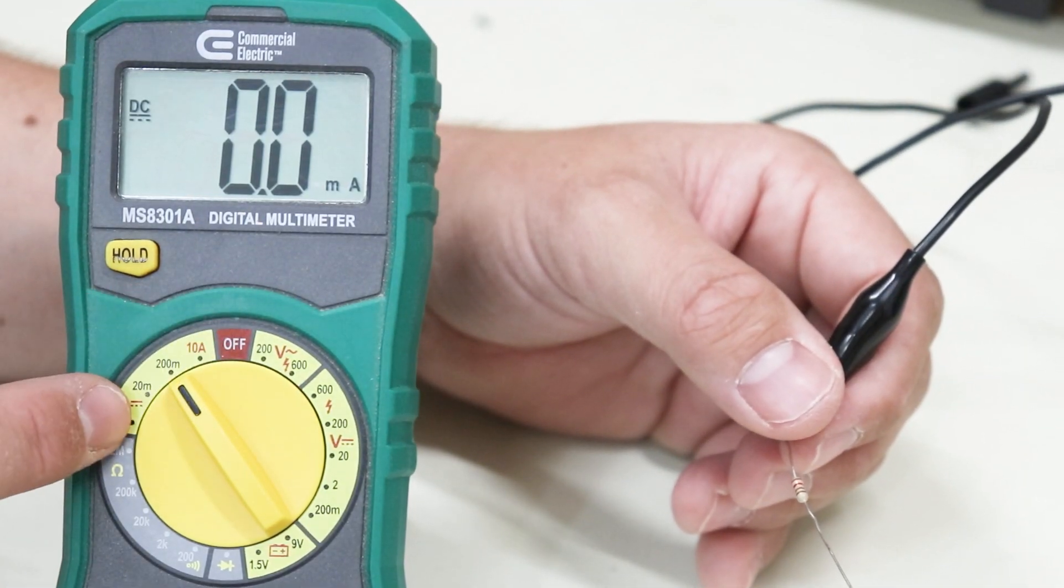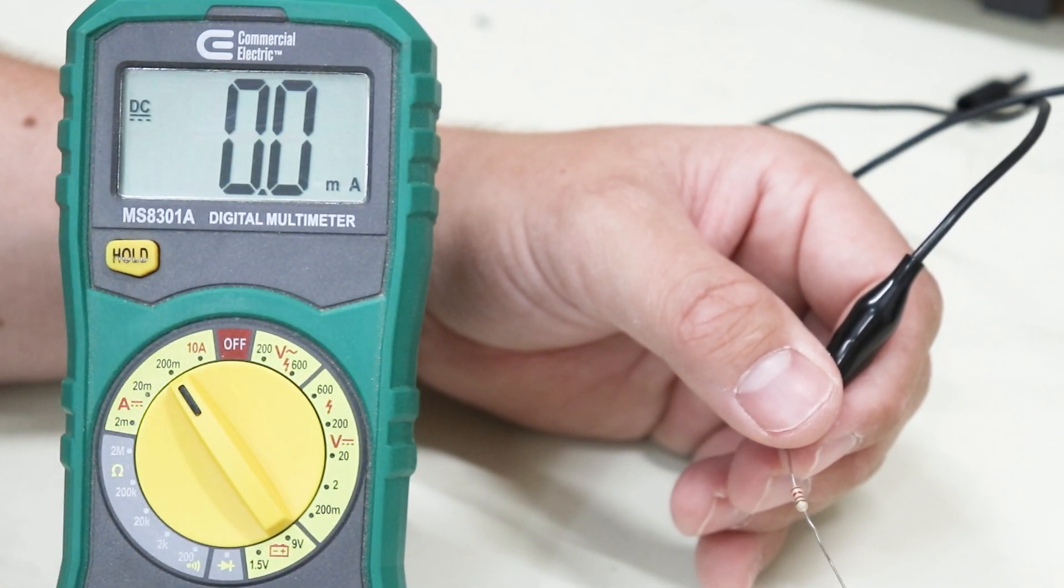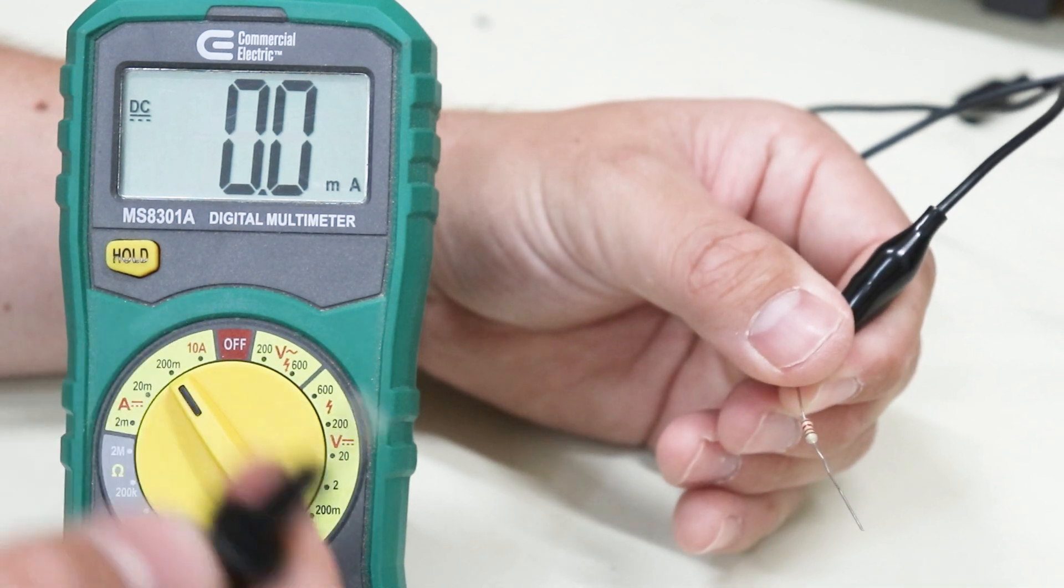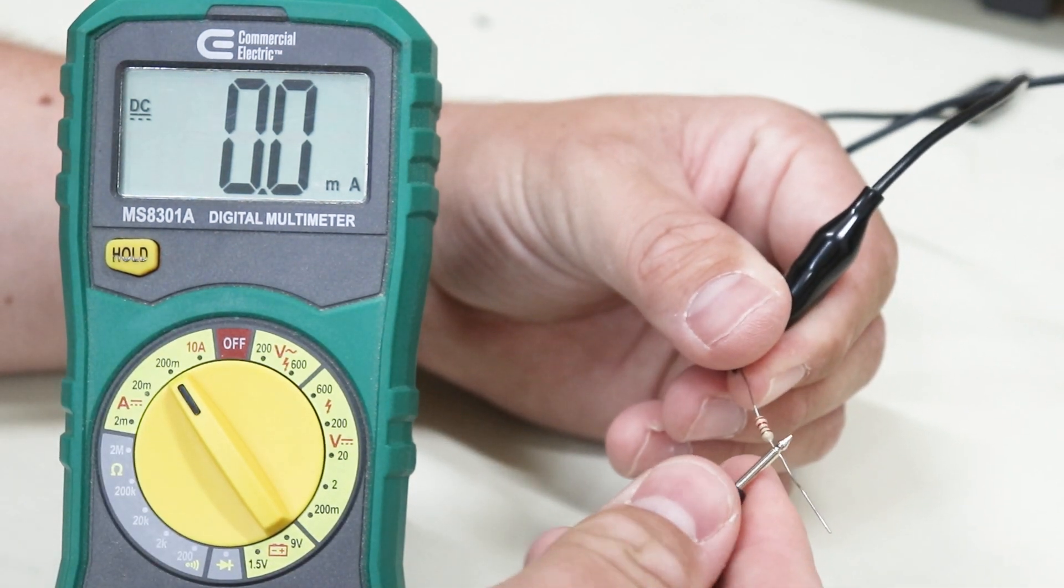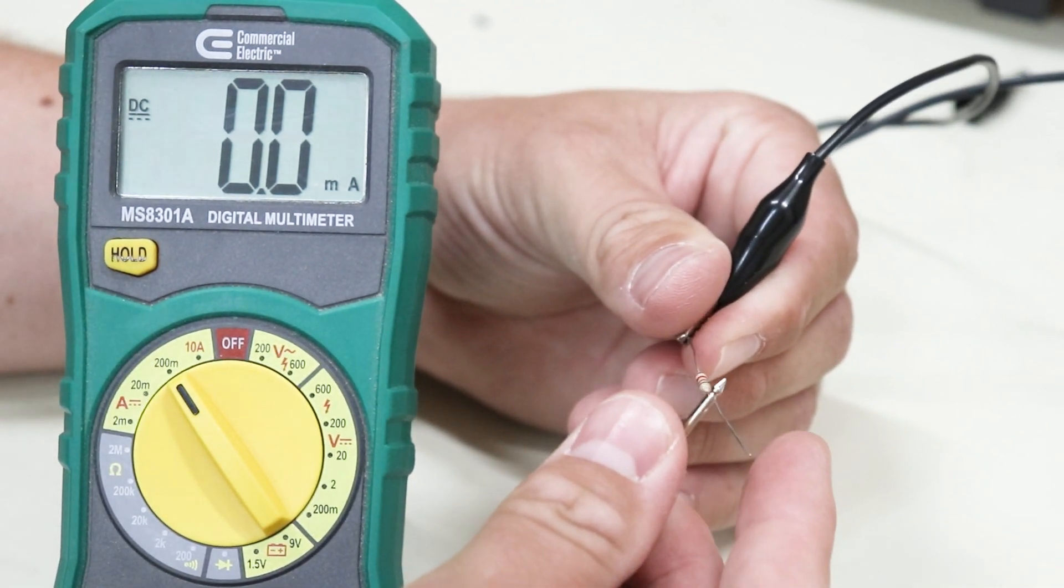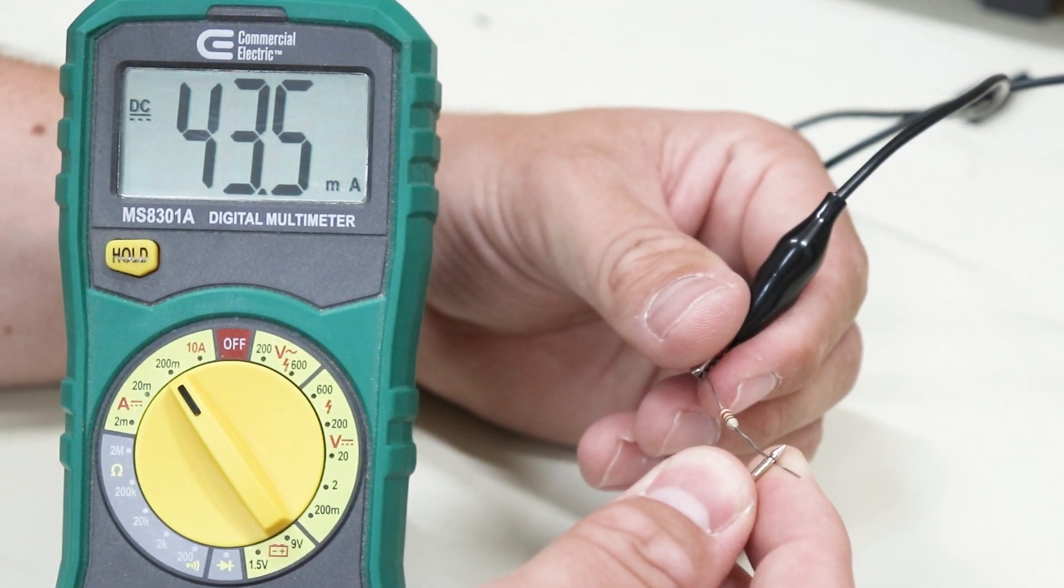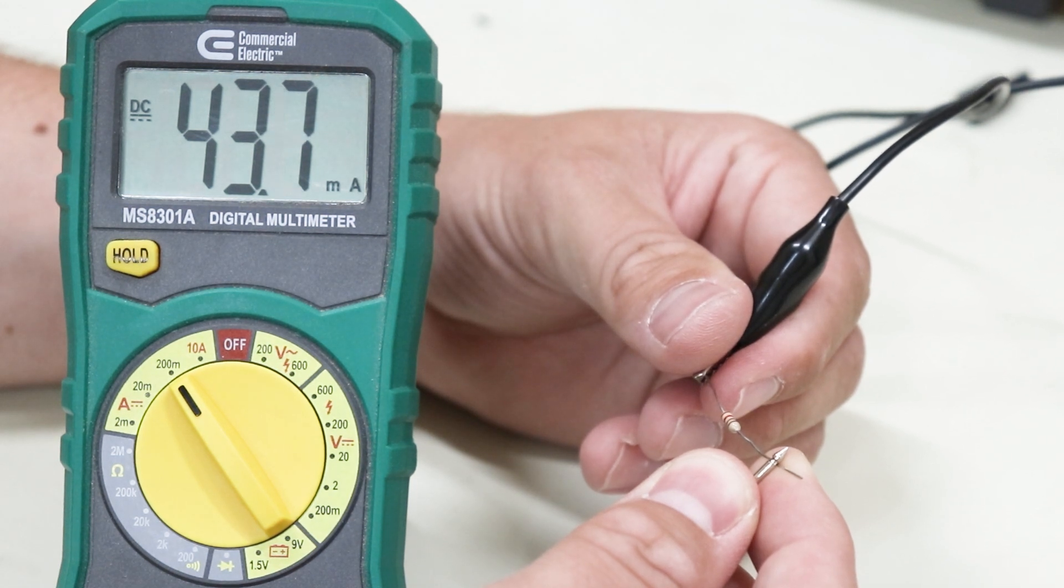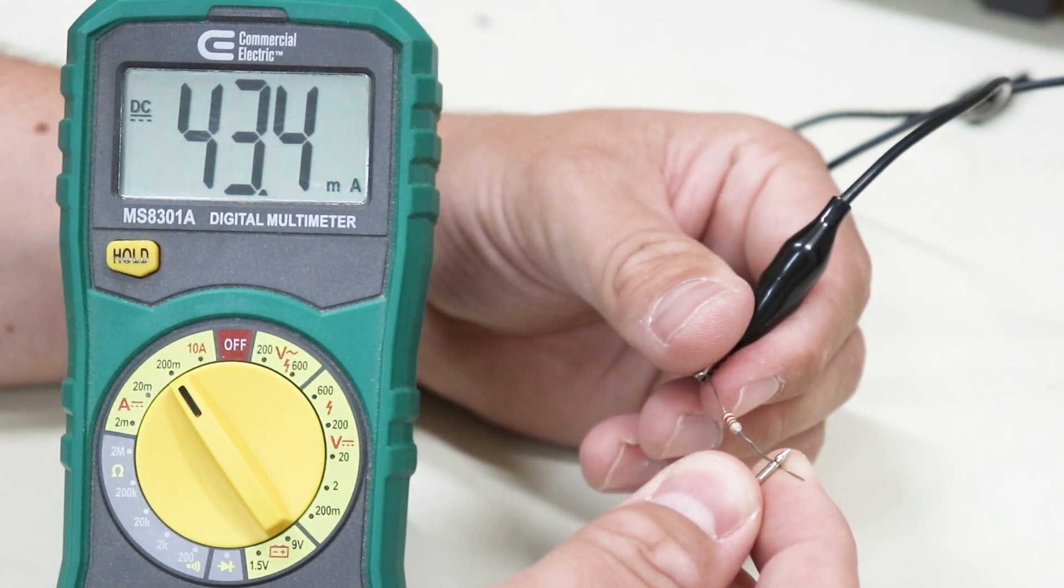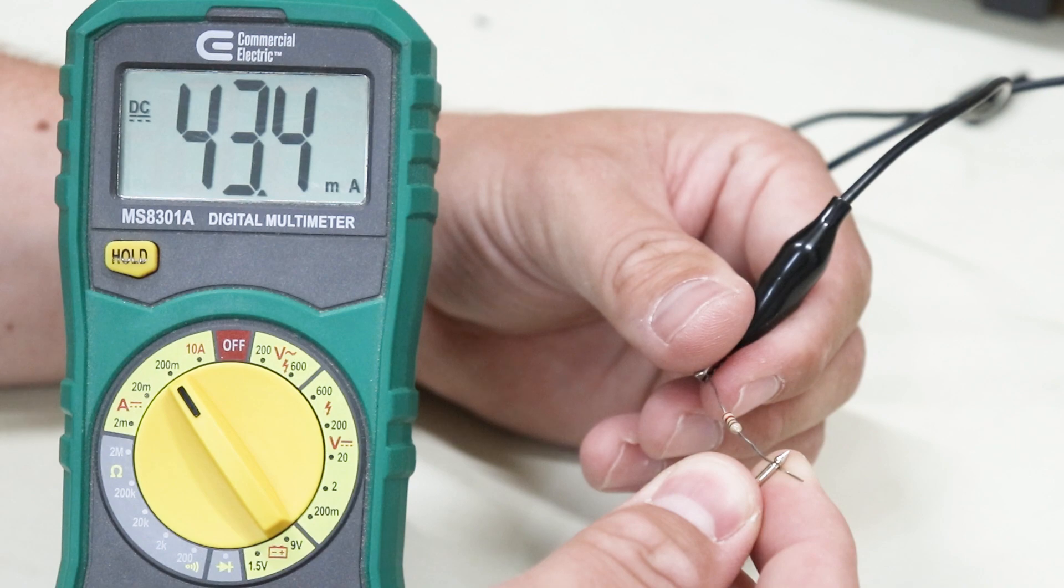I know I'm measuring current, so I've got my dial position set here to 200 milliamps. So when I touch the black probe to the other side of the resistor, I should be able to read the current flowing through the resistor. And as you can see, I've got 43.57 milliamps flowing through this resistor. So that's how you measure current.